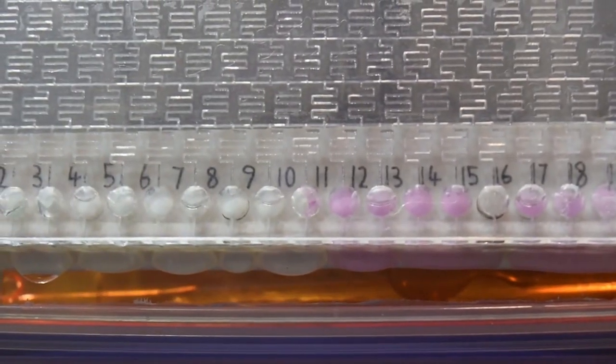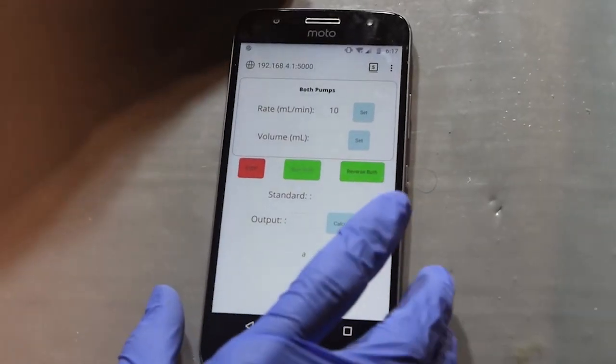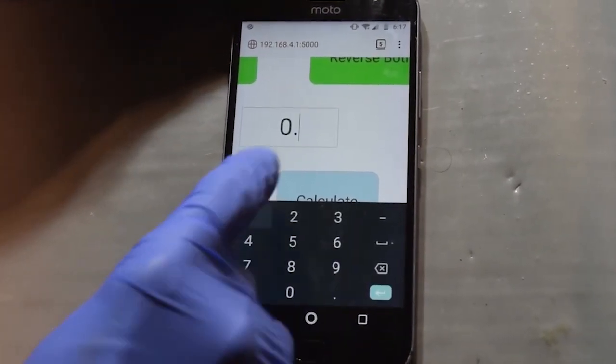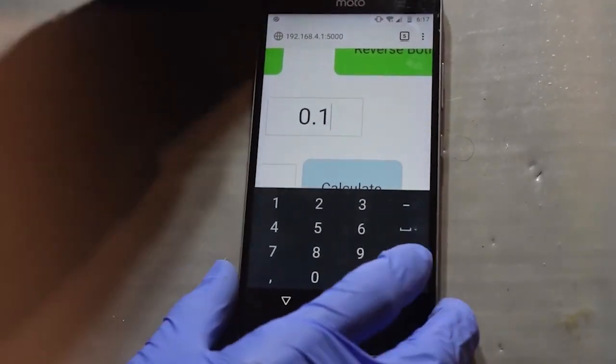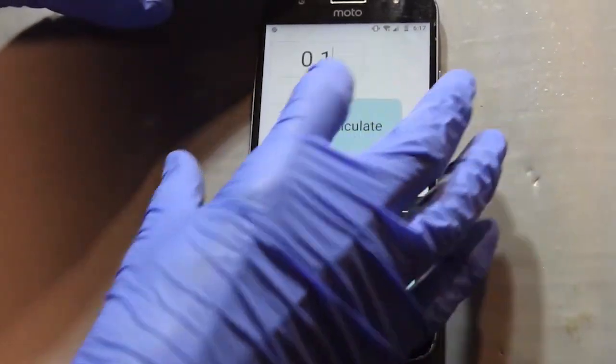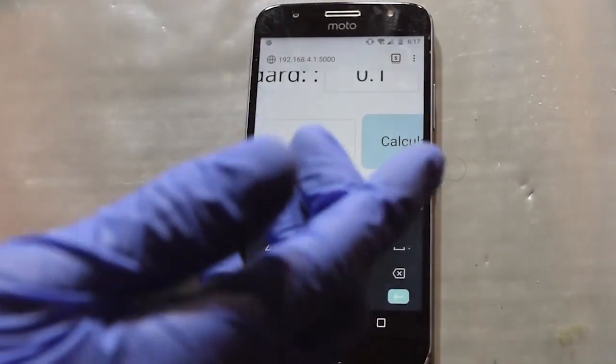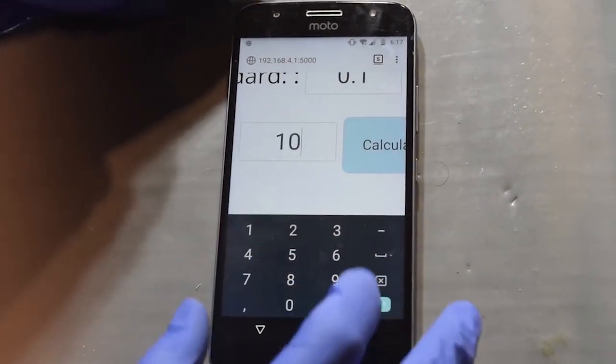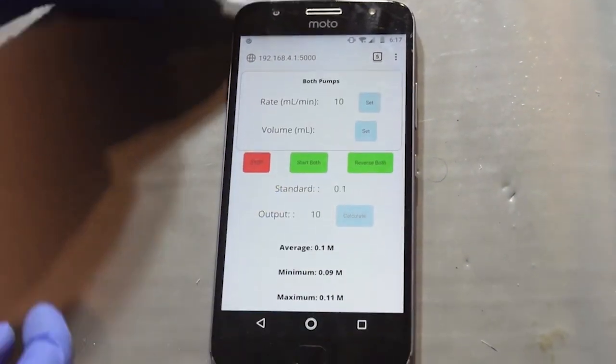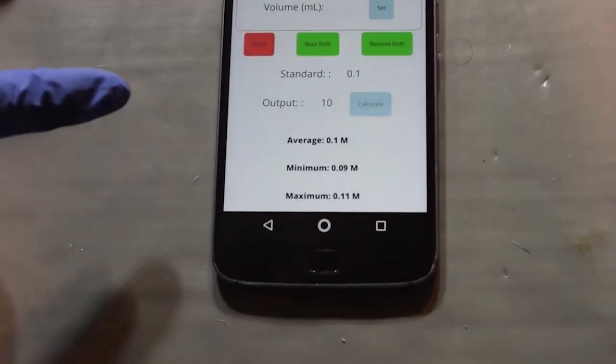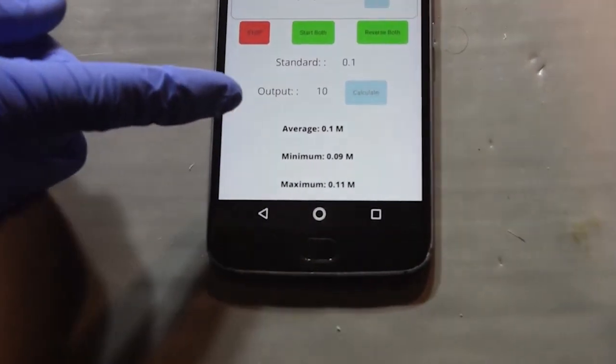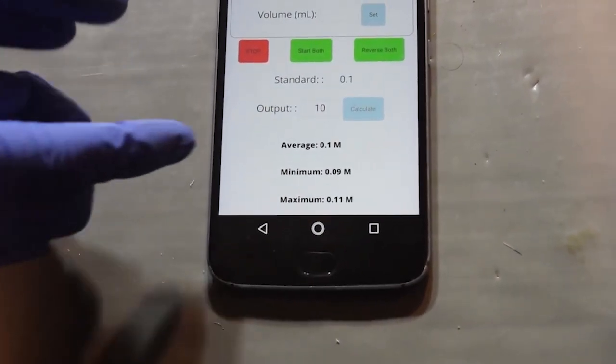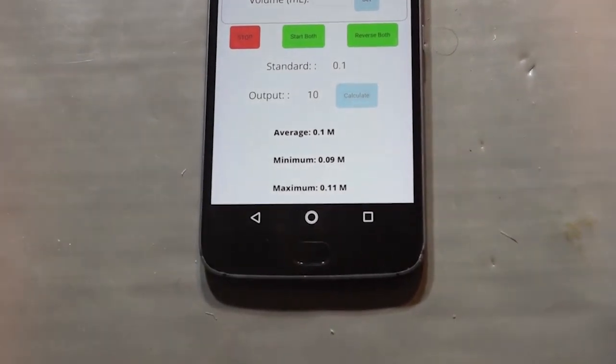So we'll go ahead and look at the app again. So to make the app perform the calculation all we need to do is type in the concentration of the standard solution. This is 0.1 molar. And then we need to also type in the number which the color change occurred on. So that was number 10. And we can calculate and we can see that the concentration of our sodium hydroxide solution must be approximately 0.1 molar and must be between 0.09 molar and 0.11 molar.